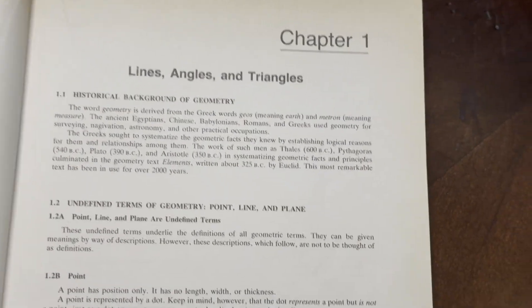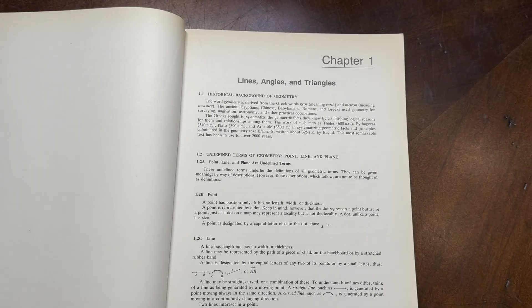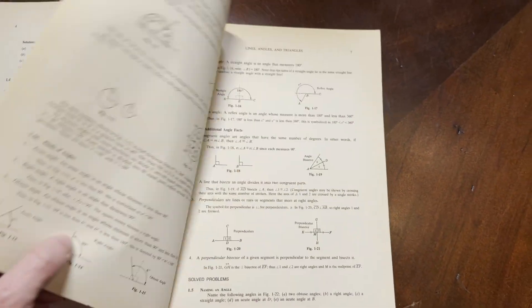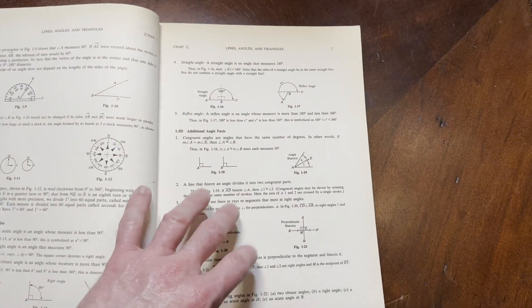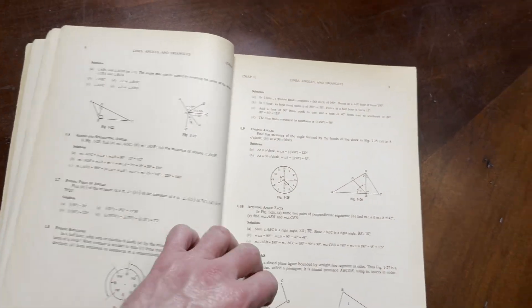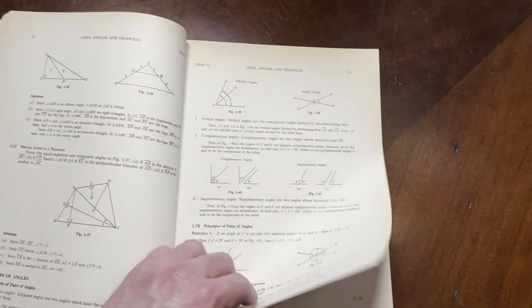And the way the Schaum's work, if you're not familiar with Schaum's outlines, is that basically you have some information. It'll teach you some stuff. Here you see it talks about point, line, and plane, line segments, and you have some solved problems along the way. Circles, angles. It goes pretty quickly. It covers a lot of content. Let's keep going.